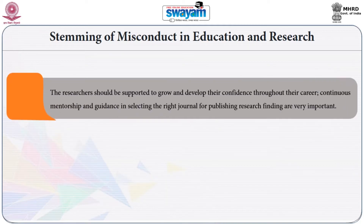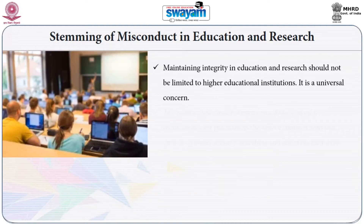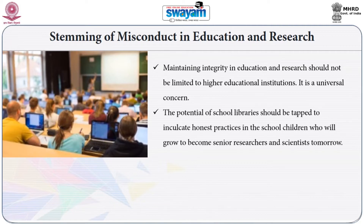The researchers should be supported to grow and develop their confidence throughout their career. Continuous mentorship and guidance in selecting the right journal for publishing research findings are very important. Some new researchers prefer to get published in predatory journals, because they want to pad up their CVs, prefer expediency to quality work and get instant recognition at their place of work. Maintaining integrity in education and research should not be limited to higher educational institutions. It is a universal concern. The potential of school libraries should be tapped to inculcate honest practices in school children who will grow to become senior researchers and scientists tomorrow.